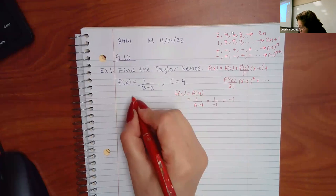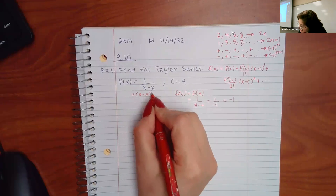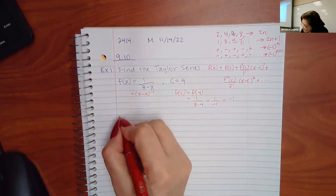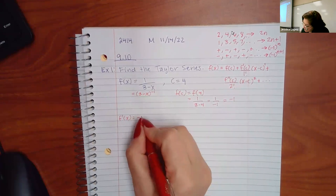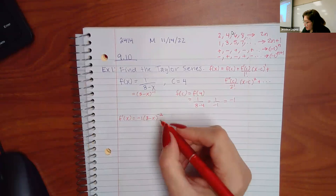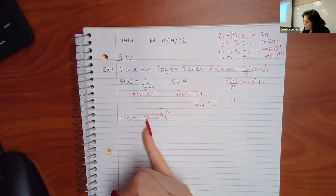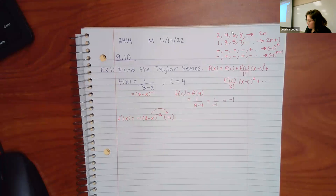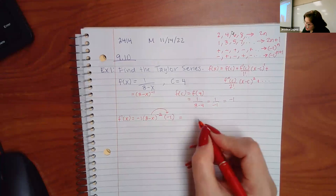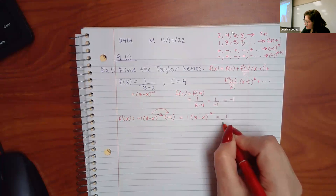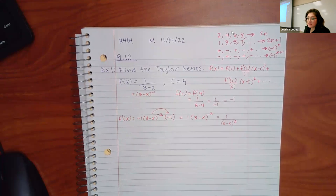Before taking the first derivative, I'd like to rewrite 1/(3−x) as (3−x)^(−1). That way I can just use the power rule and chain rule. I bring down the power of negative 1, decrease the power by 1 so it becomes negative 2, and multiply by the derivative of (3−x), which is negative 1. Together this makes positive 1 times (3−x)^(−2), or equivalently 1/(3−x)².